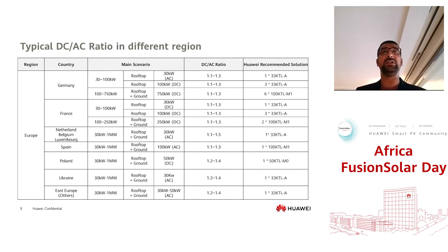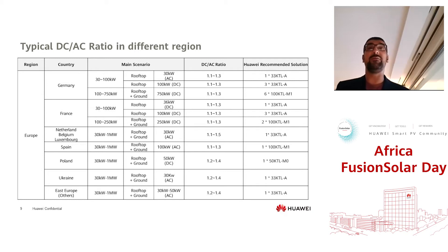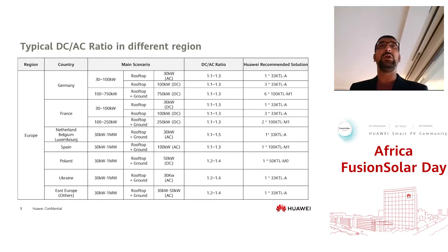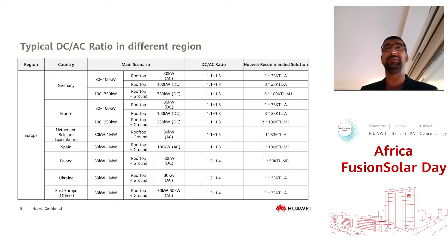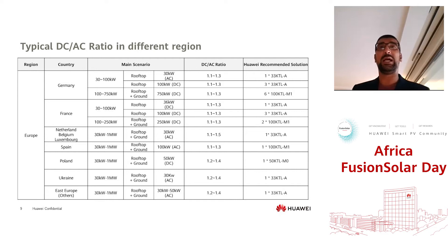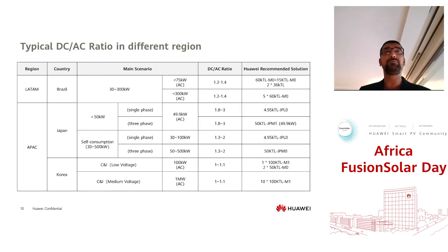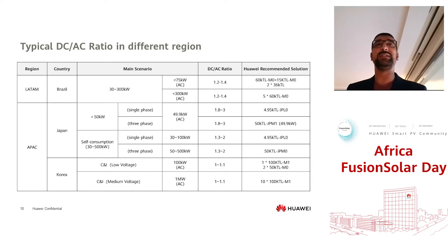Typically, DC to AC ratios differ across geographical locations. For example, in the Southern Africa market you would have a specific DC to AC ratio. In Germany, a 100 to 750 kilowatt rooftop system would have around 750 kW DC, so six of the 100KTL-M1 inverters would be suitable, providing a 1.1 to 1.3 oversizing ratio. We have examples from Latin America and Asia Pacific as well — notably, projects in Japan use quite aggressive DC to AC ratios of 1.8 to 3.